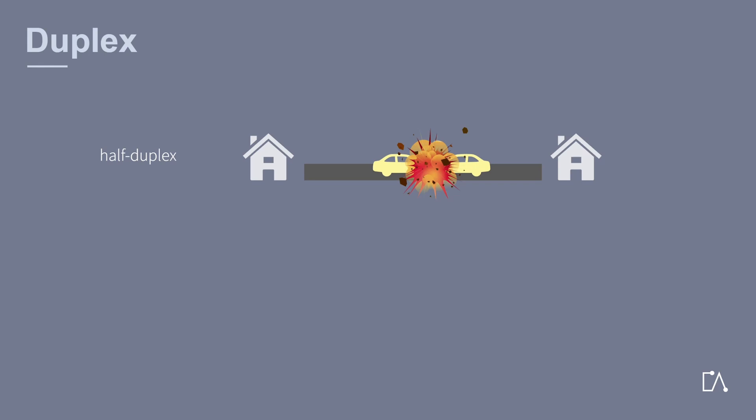On the other hand, there is full-duplex. Here, data exchange is possible in both directions at the same time.